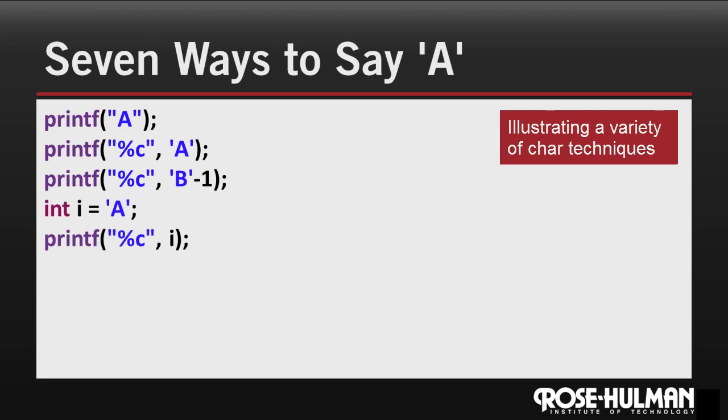In this fourth example, notice that I declare a variable of type int. But because int is also a number type, I can assign the character A to it. If I print that int using a format specifier for characters, again, I'll get the character A.